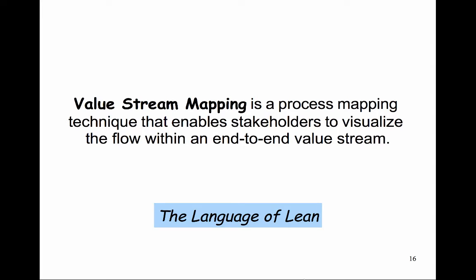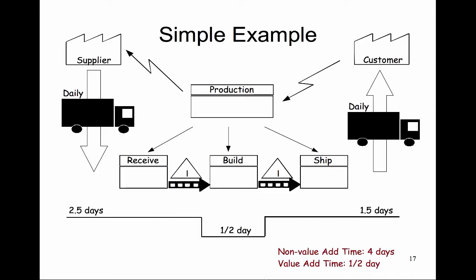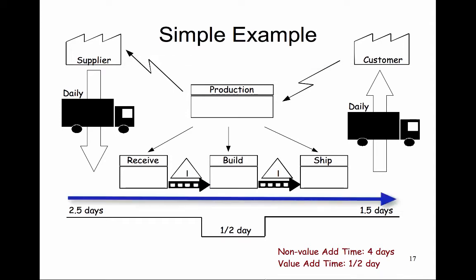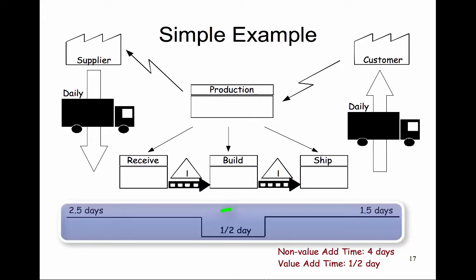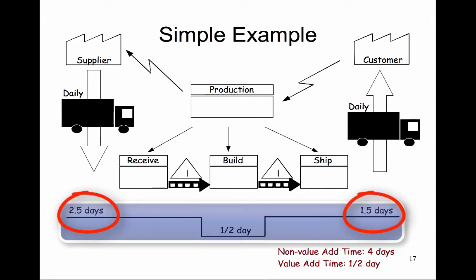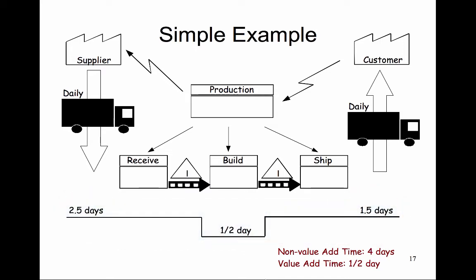VSM is a hands-on exercise to help uncover the seven deadly wastes. Looking at a simple VSM example, we can see the information flow from right to left — from the customer through to the supplier — while the material flow goes in the opposite direction, left to right. The timeline below shows the value-added times, which are the in-process times, while the non-value-added times or wait times are the upper values. In this example, the non-value-added time is four days compared to the value-added time of only half a day, quickly identifying possible areas for improvement.